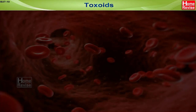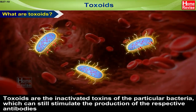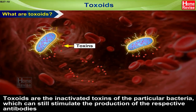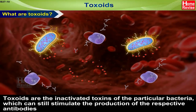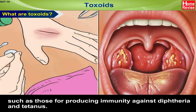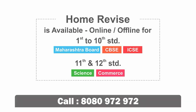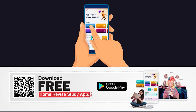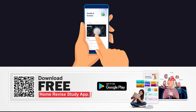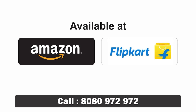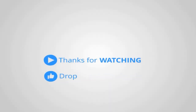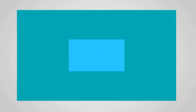Toxoids: Toxoids are the inactivated toxins of the particular bacteria which can still stimulate the production of the respective antibodies, such as those for producing immunity against diphtheria and tetanus.